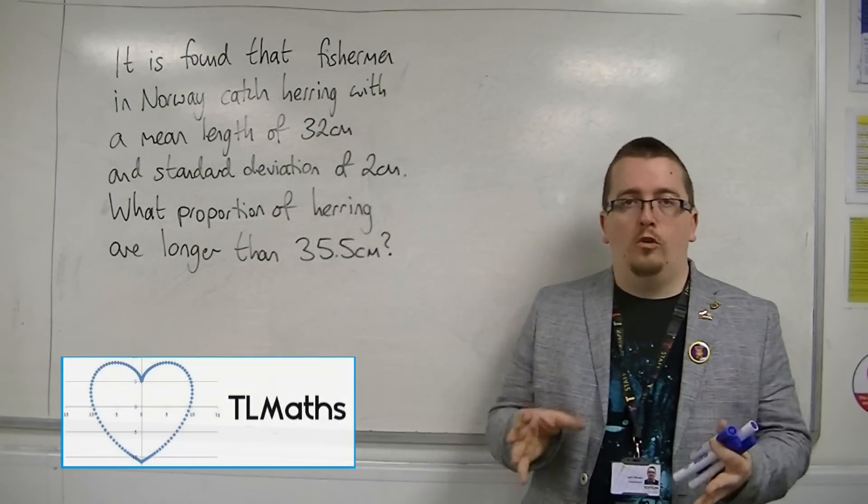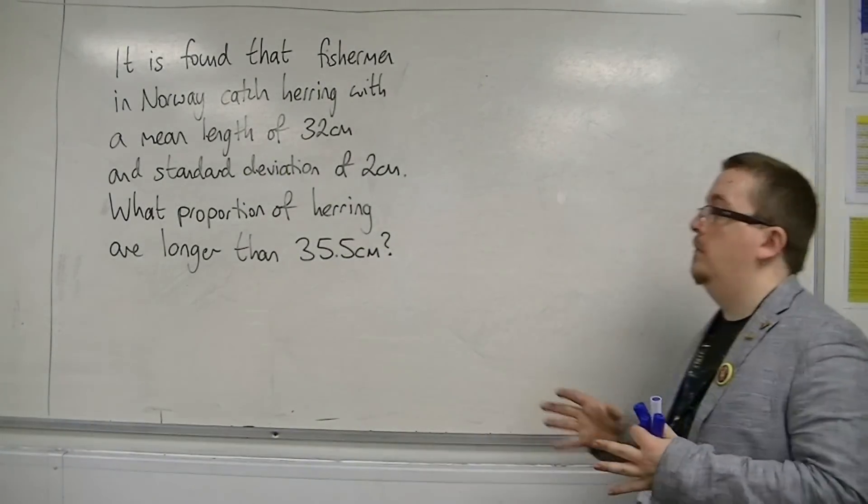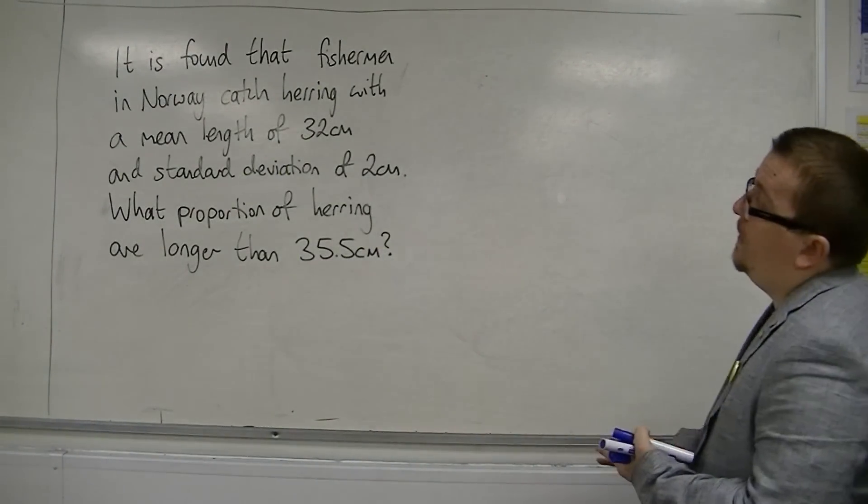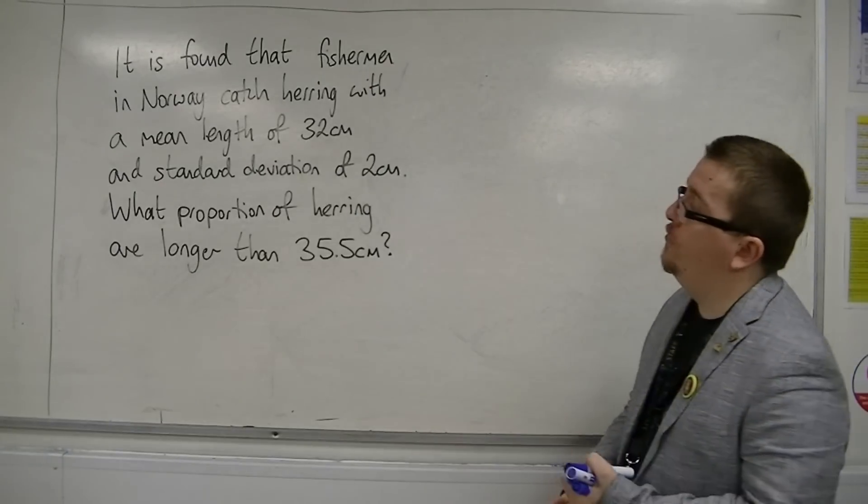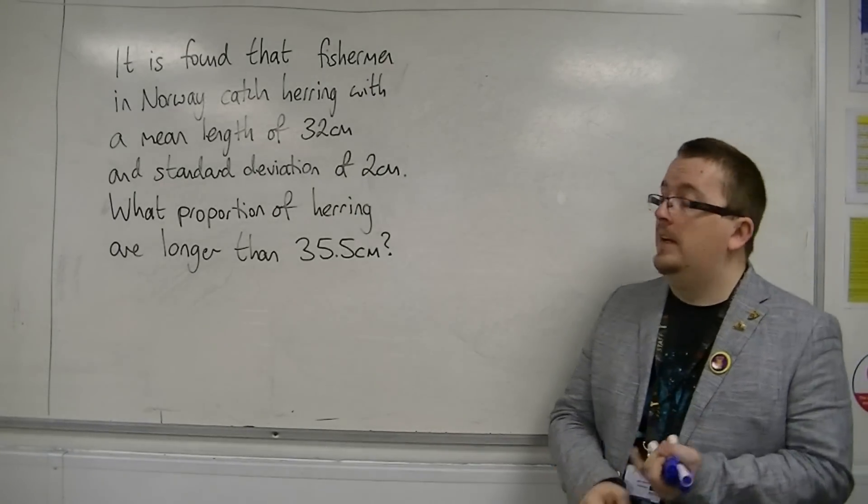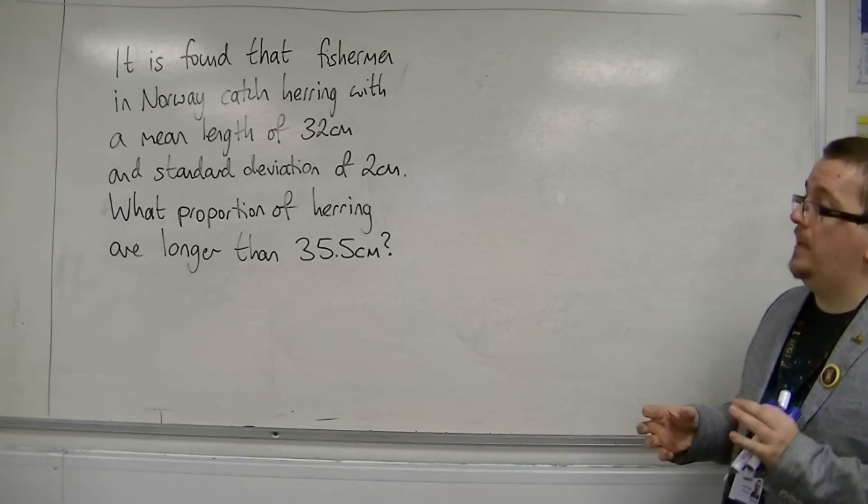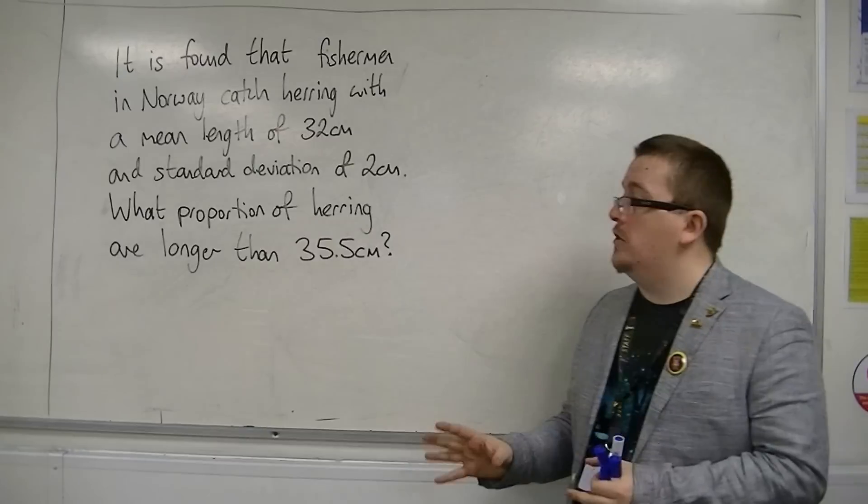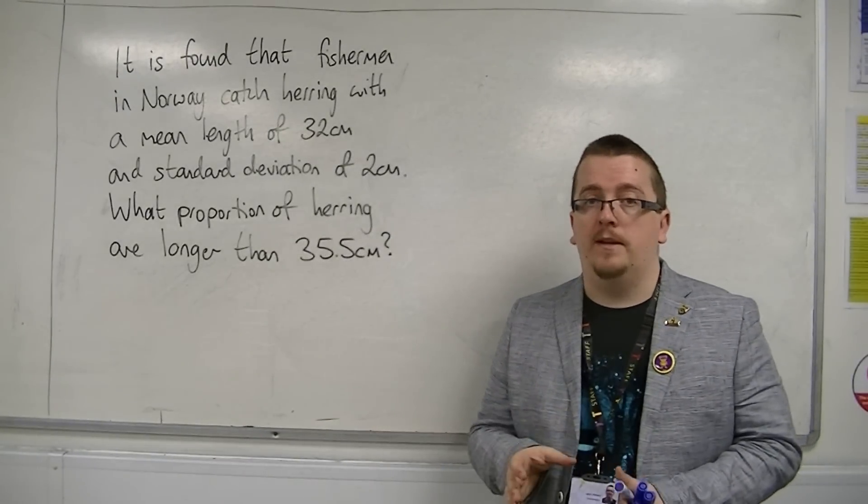So here is another normal distribution problem. It is found that fishermen in Norway catch herring with a mean length of 32 centimeters and a standard deviation of 2 centimeters. What proportion of herring are longer than 35.5 centimeters?